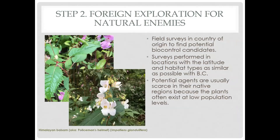Step two: foreign exploration for natural enemies. Field surveys to find potential biocontrol candidates go out throughout different countries — Turkey, Serbia, Japan, the UK — wherever the plant has come from. Some surveys have been inhibited historically by war, as surveyors can't access certain countries. In the country of origin, the target plant species and locations match the latitude and habitat as closely as possible to BC. Potential agents are usually scarce in their native regions because the plants often exist at low population levels — they are naturally under control.